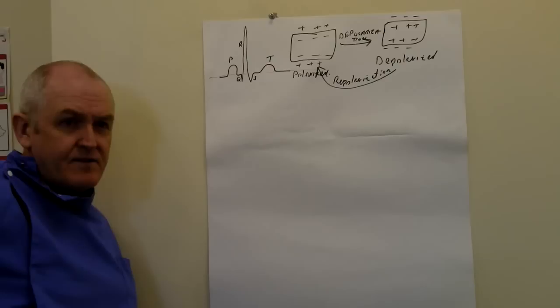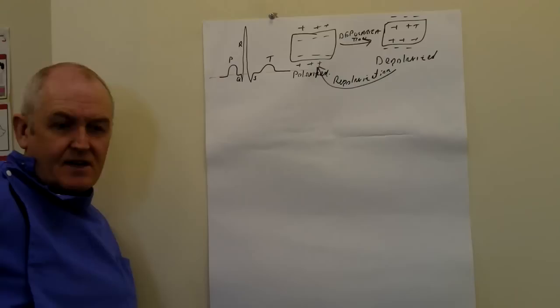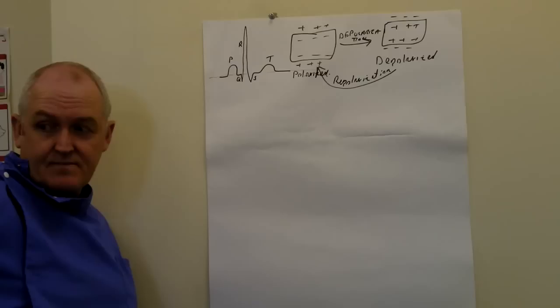And then the T wave is the ventricular myocardium repolarising — going back to normal. So the T wave is the electrical activity as detected on the surface of the body that occurs as a result of ventricular myocardial repolarisation. So the ventricle's going back to normal.